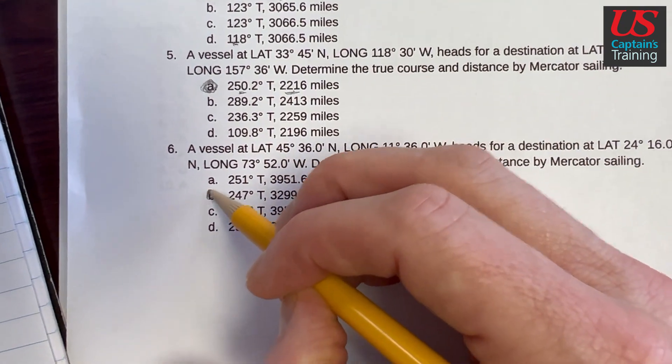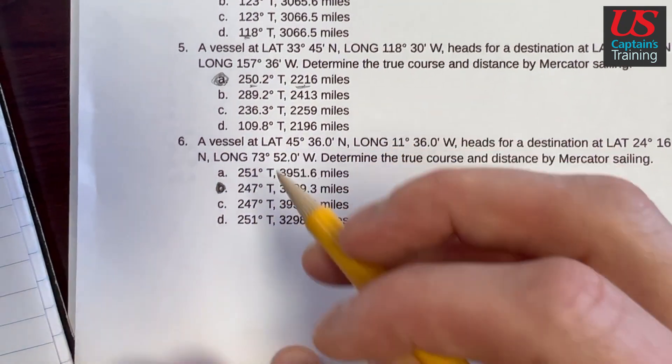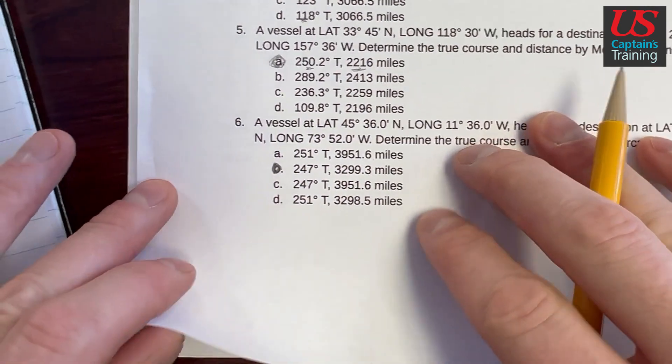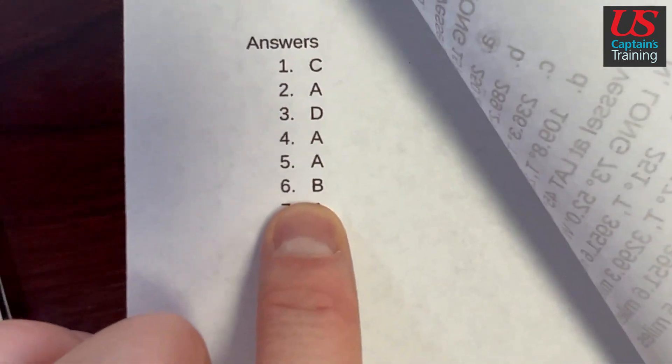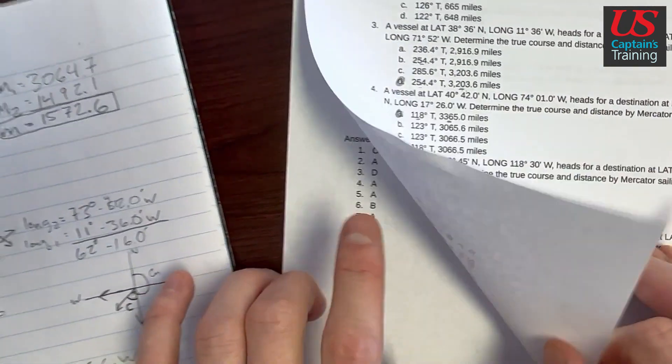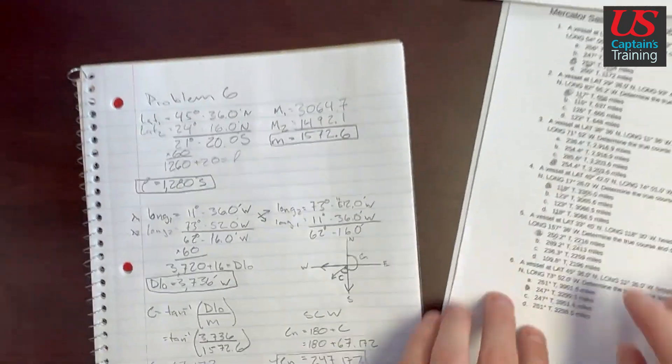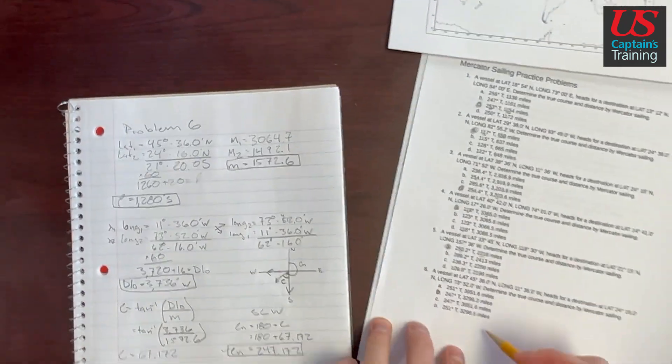So we have CN equals 247 degrees and distance equals 3,299.3 nautical miles. The answer is choice B. We got the right answer. And that's Mercator Sailing practice problem 6.